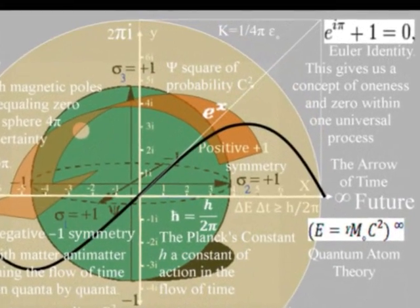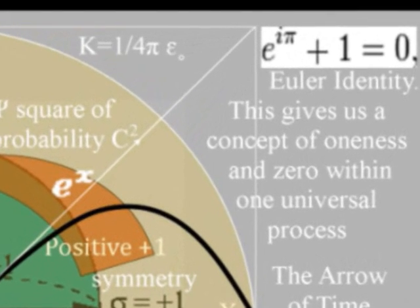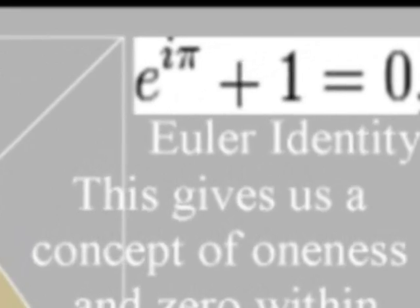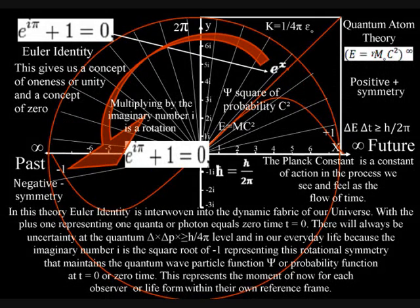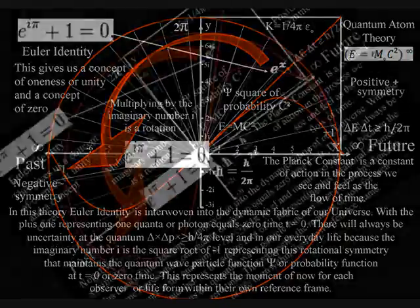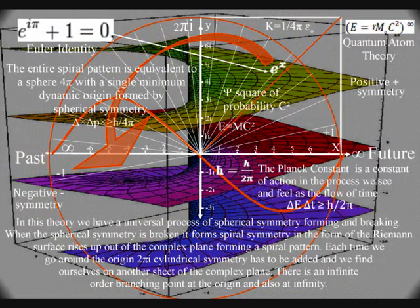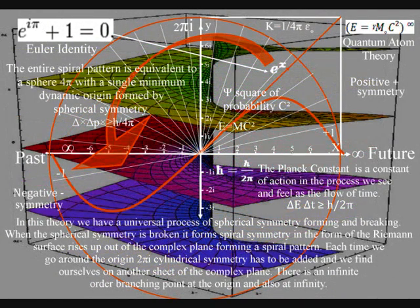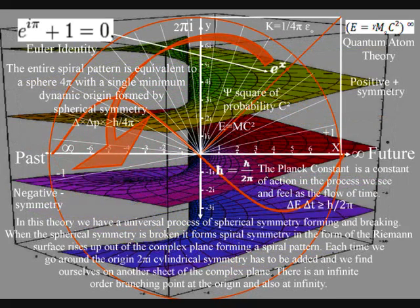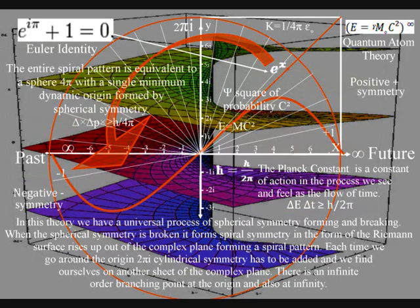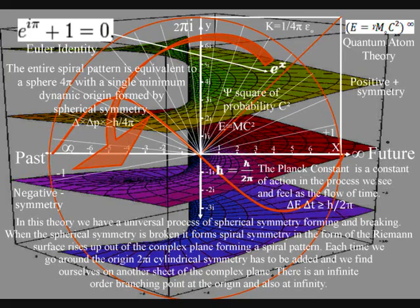In the top right hand corner of this diagram we have Euler's identity — the most beautiful equation to come out of the mind of man. But this beautiful equation has no meaning or purpose in modern physics. In this theory, Euler's identity is interwoven into the dynamic fabric of our universe, with the plus one representing one quantum or photon equals zero time — t equals zero — the moment of now. To understand this further we have to use the next diagram, that shows how this spherical symmetry breaks, forming spiral symmetry that has line symmetry for the arrow of time. When the spherical symmetry is broken, it forms spiral symmetry in the form of the Riemann surface rising up out of the complex plane, forming a spiral pattern. Euler's identity is at the heart of this process.